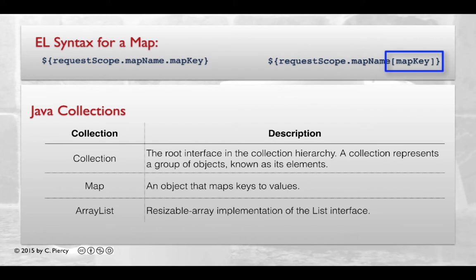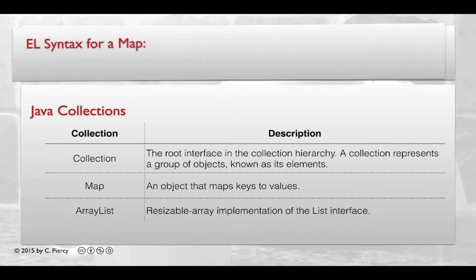Then in square brackets, you put the map key. I generally prefer this format as it reminds me that the map is a type of collection. And we are capable of accessing most collection objects using the second type of notation.